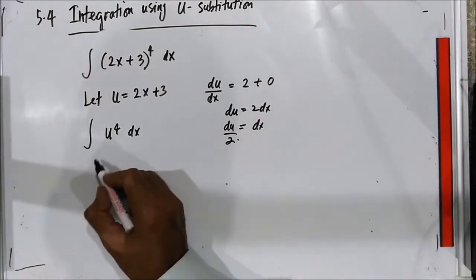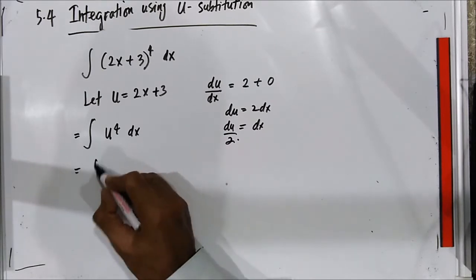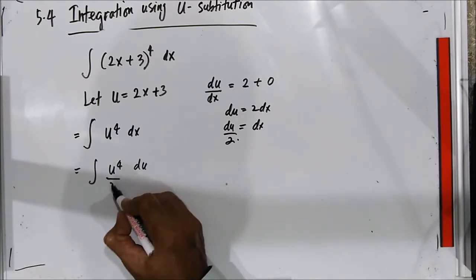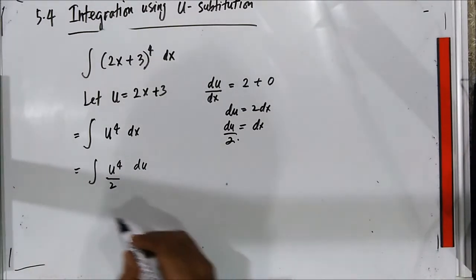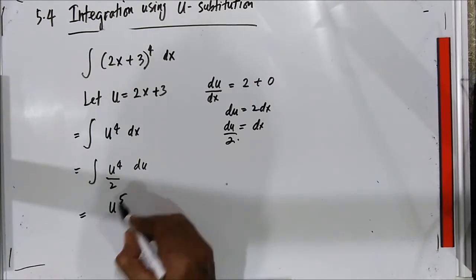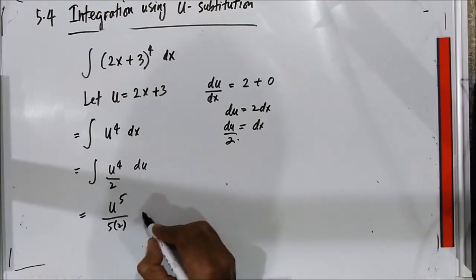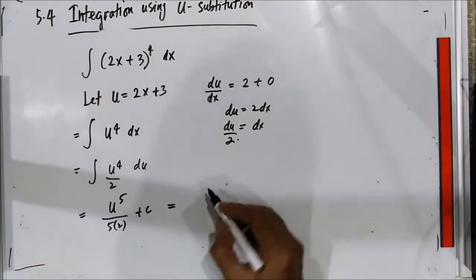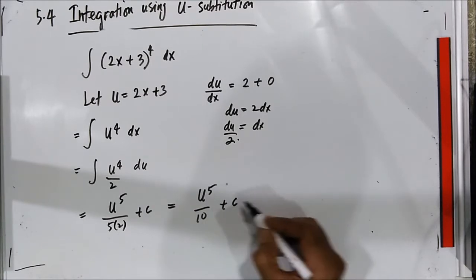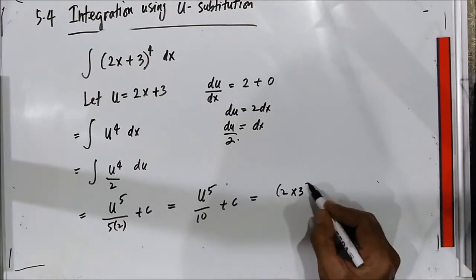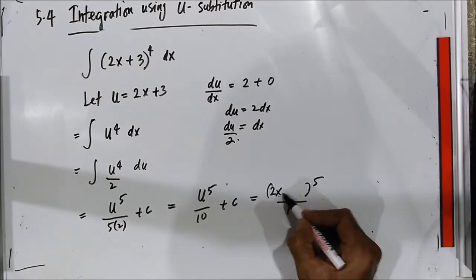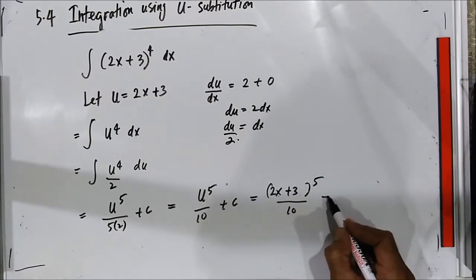So dx equals du over 2. The integral becomes u⁴ times du/2. Integrating with respect to u using the basic formula, we get u raised to 4+1 which is 5, over 5 multiplied by 2 plus C. This gives u⁵ over 10 plus C. Then substituting back, we get (2x² + 3)⁵ over 10 plus C.